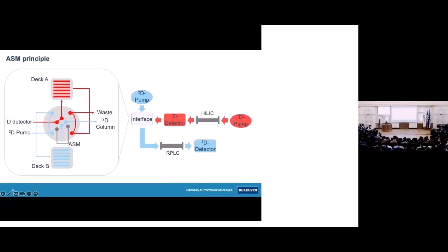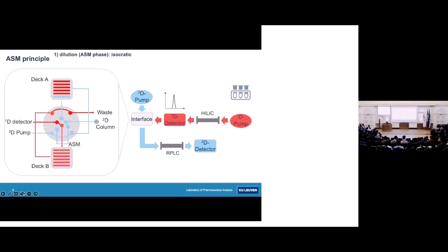How does this principle actually work? The sample being analyzed in the first dimension reaches the interface where it is stored in sampling loops. The ASM valve then switches — first the ASM or dilution phase runs, during which the sample stored in the loops becomes stagnant because the mobile phase flows via the bypass. Then the sample is sent to the reverse phase column in the second dimension, and after this dilution step the actual gradient starts — the percentage of acetonitrile increases and the analytes are analyzed in the second dimension.